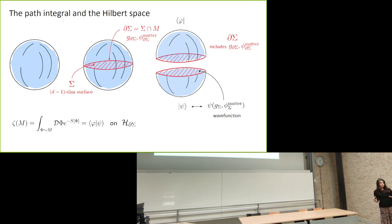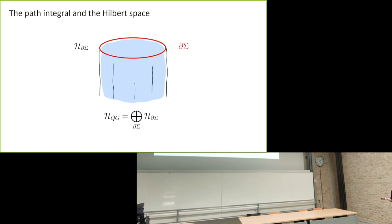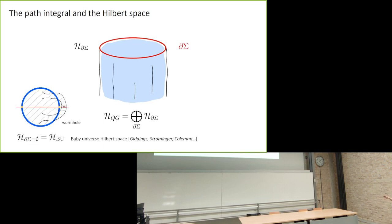The path integral computes an inner product on a Hilbert space, between two states given by the path integral computed with boundary conditions on the two sides. The conditions on ∂σ are independent of the state and label the Hilbert space on these slices. The full quantum gravity Hilbert space is a direct sum over all possible configurations for the co-dimension two surface, and the no-boundary case is the baby universe Hilbert space describing closed universes.